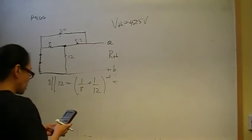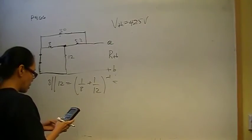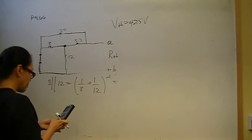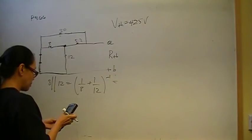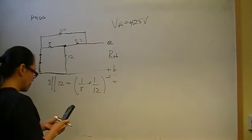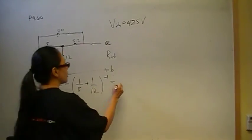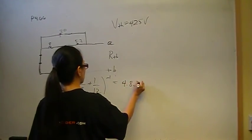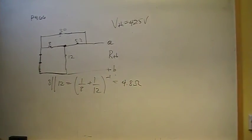So 1 divided by 8 plus 1 divided by 12, the inverse of that. And that's going to be 4.8 ohms. So all that can be replaced by 4.8.